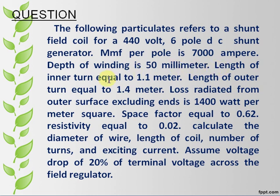Loss radiated from outer surface excluding ends is 1400 watt per meter square. Space factor equals 0.62. Resistivity equals 0.02. Calculate the diameter of wire, length of coil, number of turns, and exciting current. Assume voltage drop of 20% of terminal voltage across the field regulator.